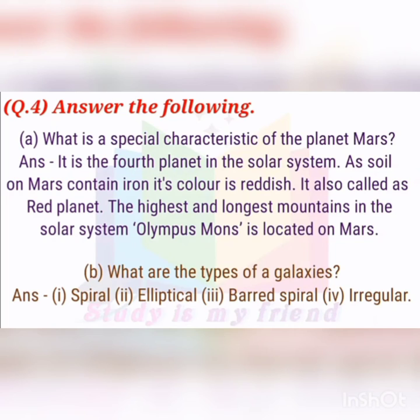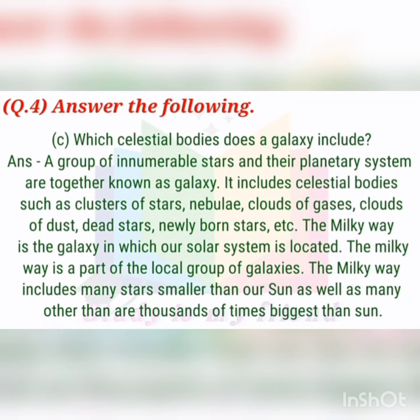Which celestial bodies does a galaxy include? A group of nebulae, stars, and their planetary systems together are known as a galaxy. It includes celestial bodies such as clusters of stars, nebula, clouds of gas, clouds of dust, dead stars, and newly born stars.